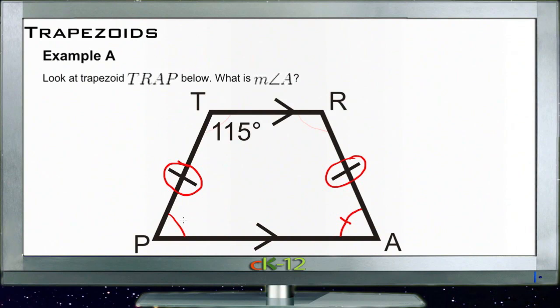And if those two angles are the same, these two angles up here are the same, which tells us that we have 115 degrees and another 115 degrees.